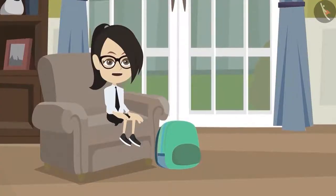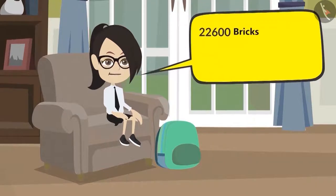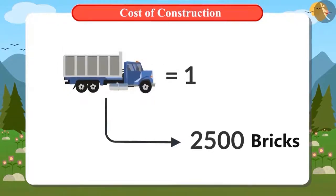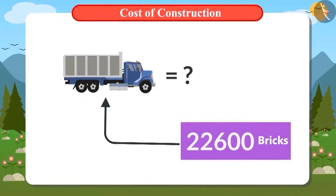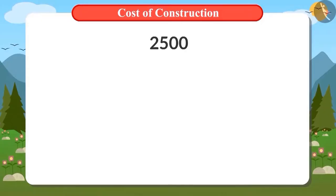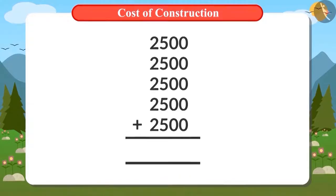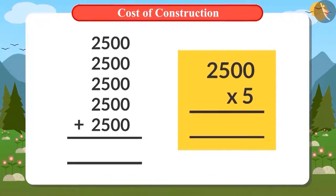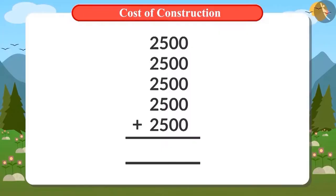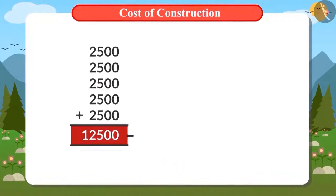Now we need to find out how much it will cost to bring these bricks home, but first we need to know how many trucks of bricks will make up 22,600 bricks. 2,500 bricks come in one truck. To find how many trucks are needed, we keep adding 2,500 until we reach 22,600. Adding 2,500 five times gives 12,500, which is smaller than 22,600.